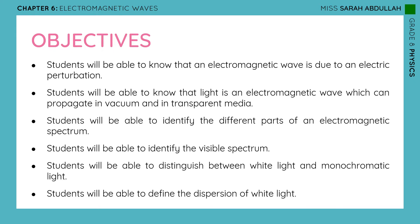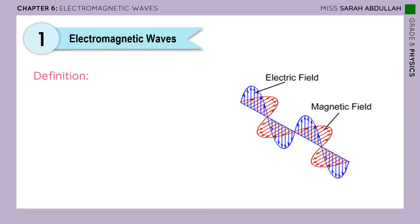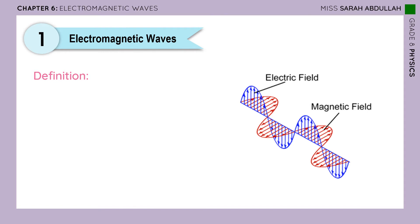Starting with the definition of electromagnetic waves — let's look at the name. Electromagnetic means part of it is electric and another part is magnetic. If you take a look at the diagram, you would see two waves, one in blue and one in red, and both of these waves are transverse. This is how an electromagnetic wave looks.